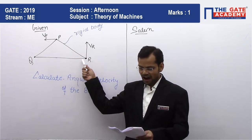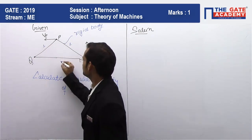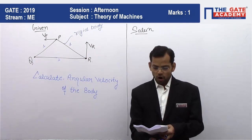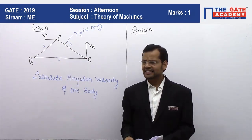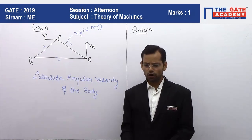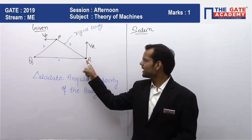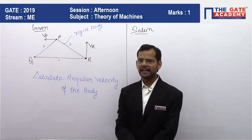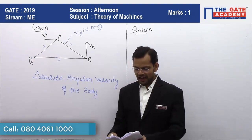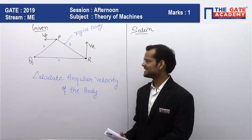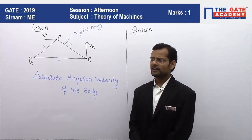The question is: a rigid triangular body BQR with sides of equal length of one unit moves on a flat plane. At the instant shown, the edge QR is parallel to the x-axis, and the body moves such that the velocity of point B is VP and the velocity of point R is VR respectively, as shown in the figure. Calculate the magnitude of angular velocity of this rigid body. This is a very easy question and can be easily solved by the concept of instantaneous center.